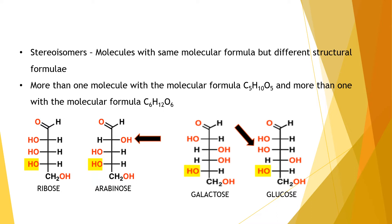Similarly, galactose and glucose both have the molecular formula C₆H₁₂O₆, but differ in the positioning of one OH group in galactose. Glucose is taken as the standard reference, so it is galactose that has a change in the position of the OH group. All four structures — ribose, arabinose, glucose, and galactose — have aldehyde as their subgroup, making them all aldose sugars. The best example of a ketose sugar is fructose.